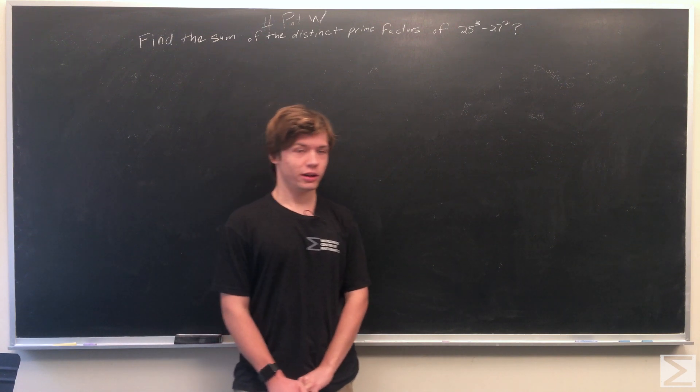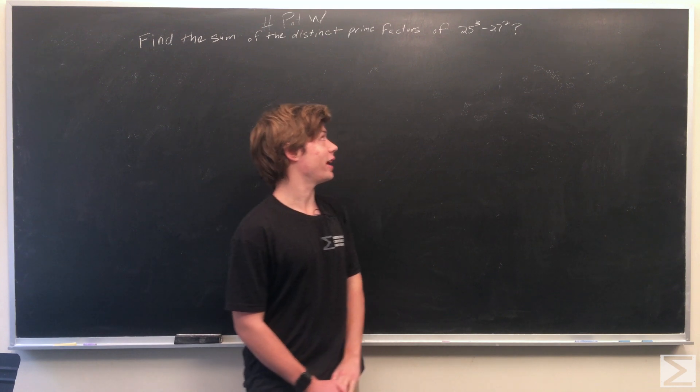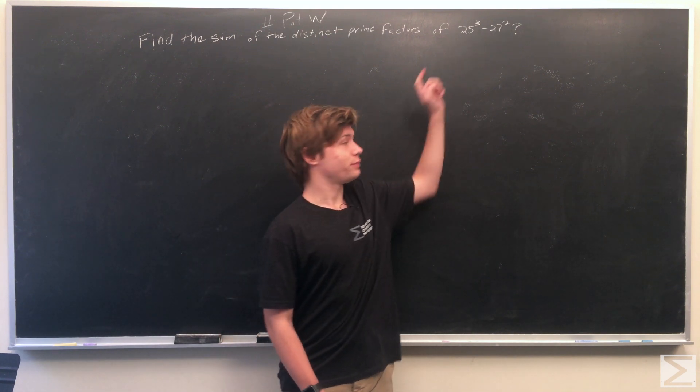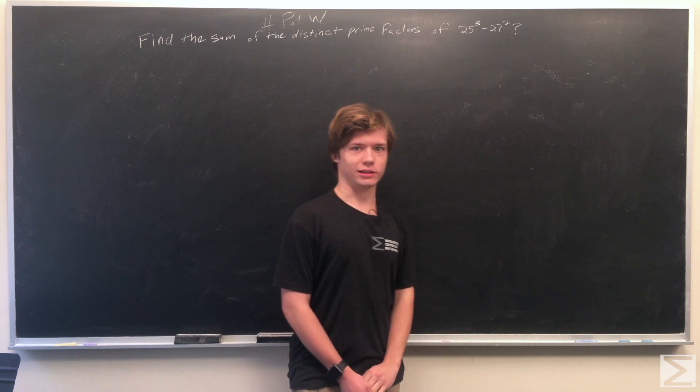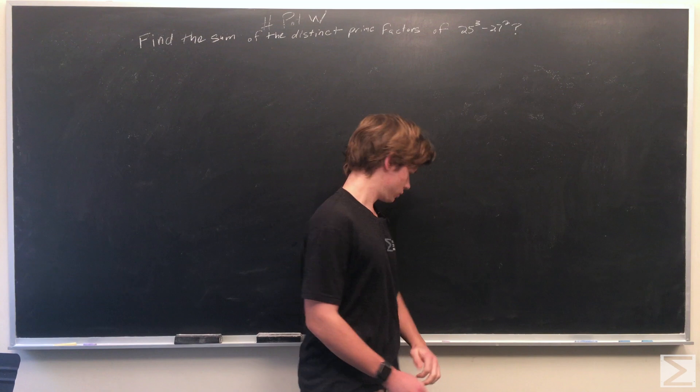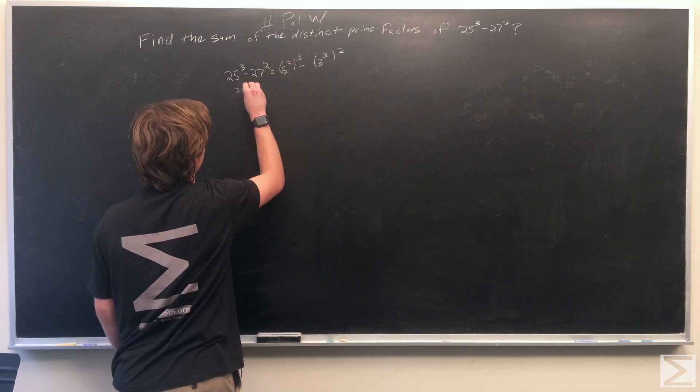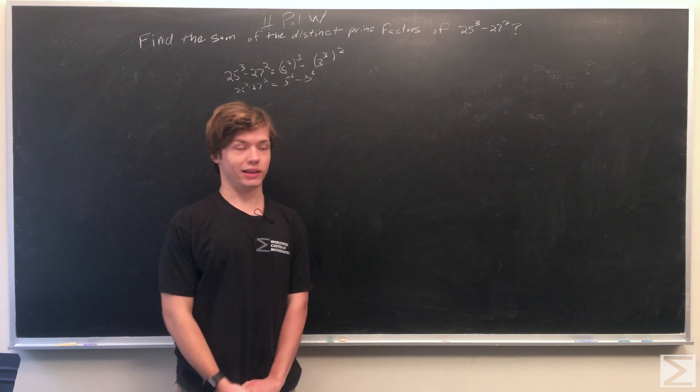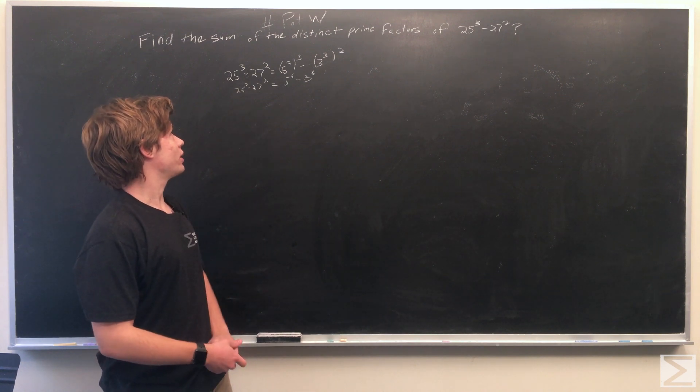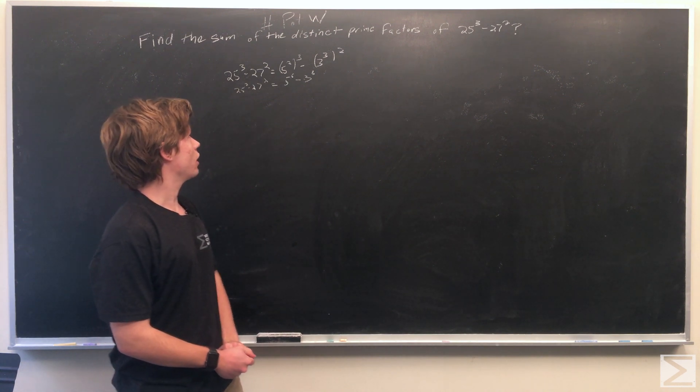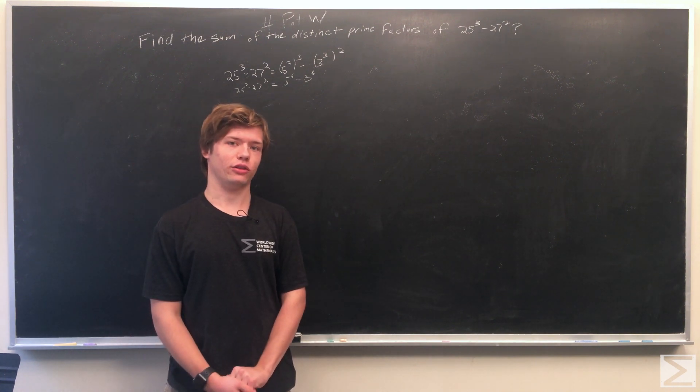The first thing we're going to do is try and factor this down a little bit and make it look a little nicer. You'll observe that 25 is equal to 5 squared and 27 is equal to 3 cubed. So we will make those substitutions. So we made that substitution and we see that 25 cubed minus 27 squared is equal to 5 to the 6th power minus 3 to the 6th power.